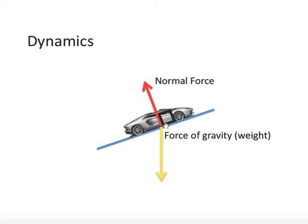And so because these two vectors don't line up — because they're not exactly opposite in direction to each other — there is no way in this situation that the normal force will be equal to the force of gravity. So please watch the next video on normal force to learn more details about it.